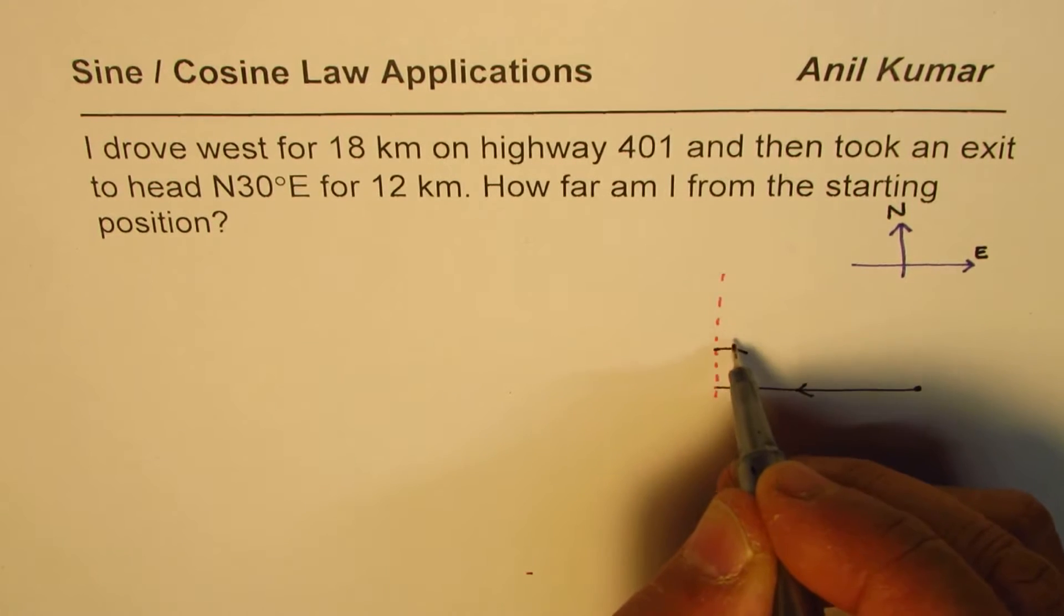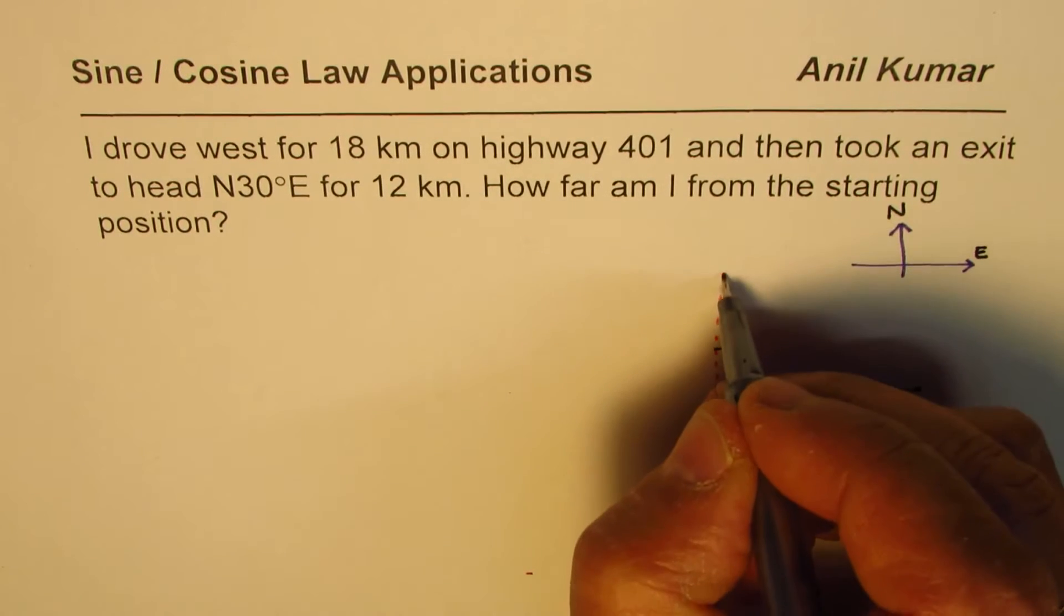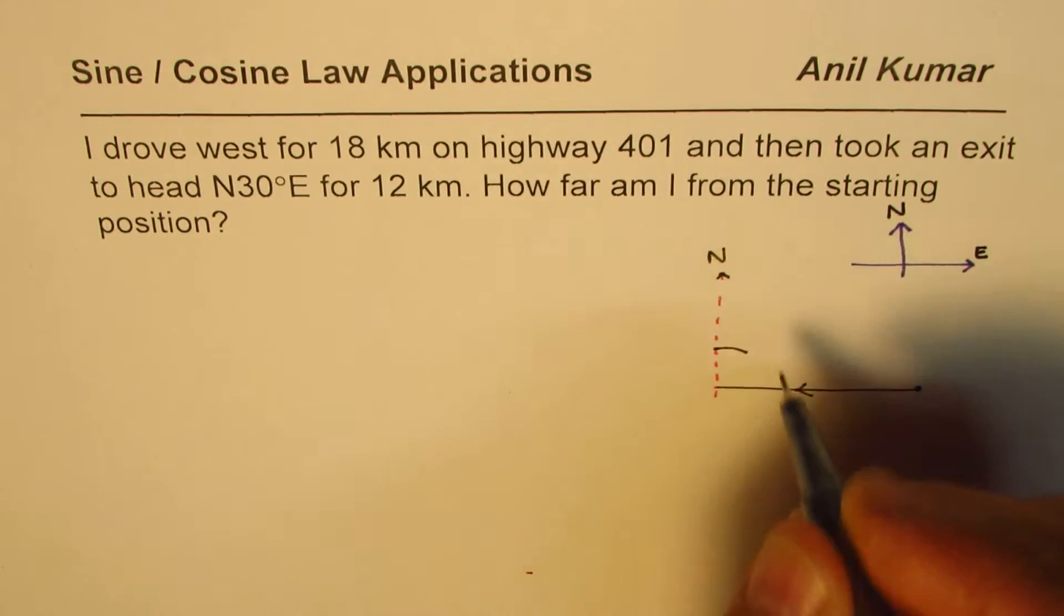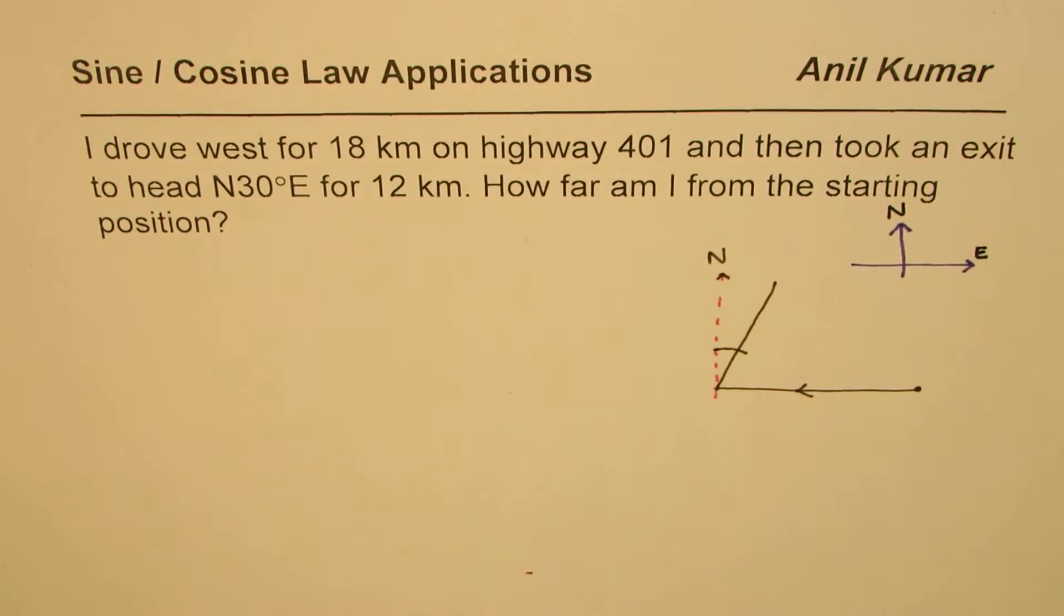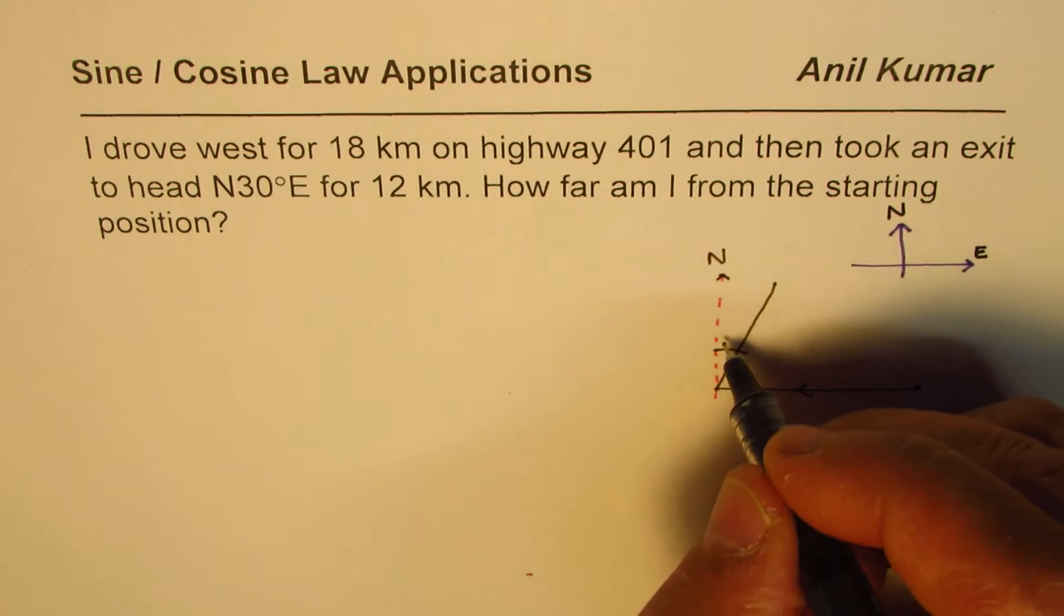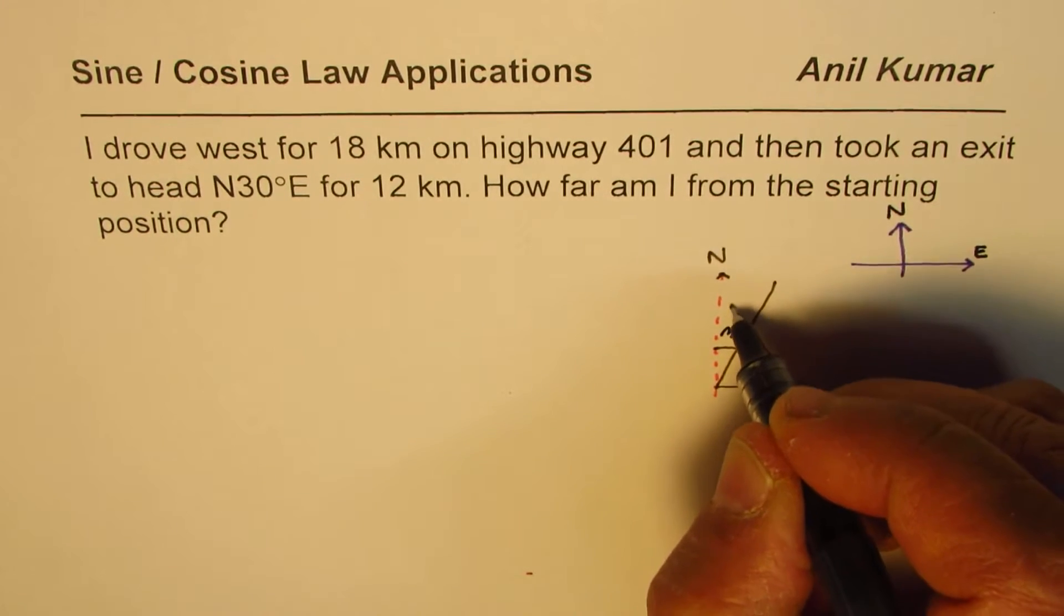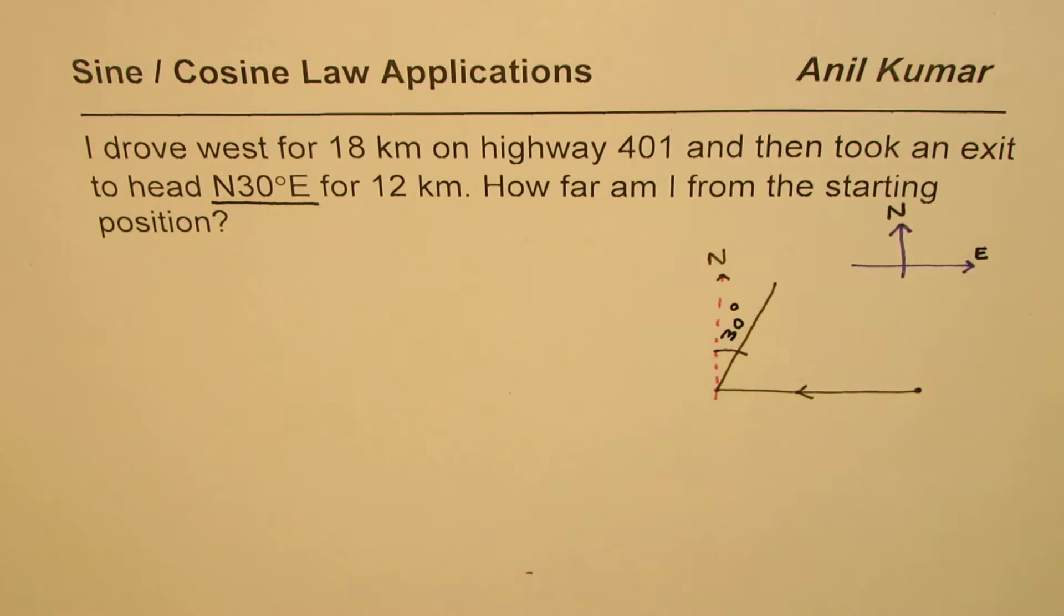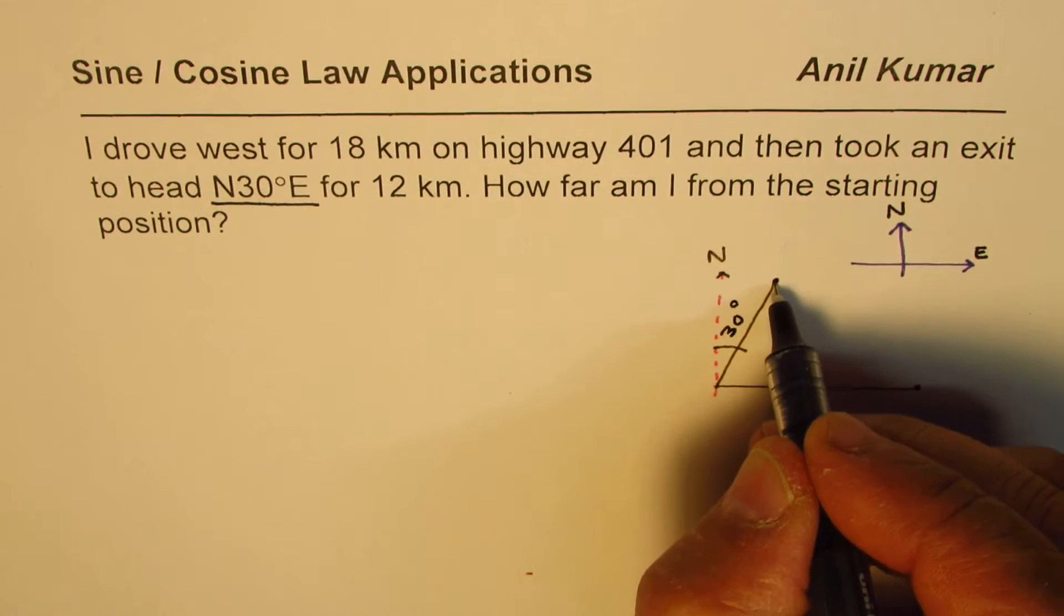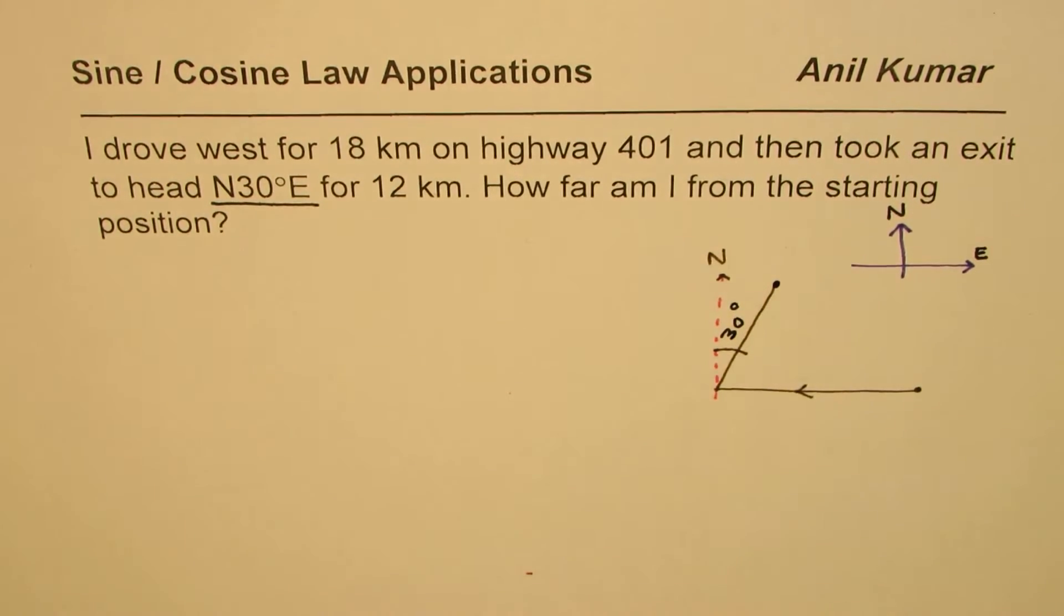When I say from north 30 degrees east, that means the angle it makes with the north is 30 degrees. We go in this direction and the angle which it makes with the north is 30 degrees. On this path, I travel 12 kilometers.